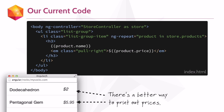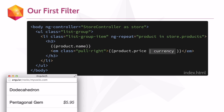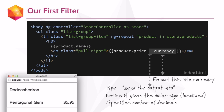Luckily, Angular has a better way to deal with currency. We can use the currency filter in our price expression. Notice here, between these two calls, we have a pipe. The pipe says: take the result of the first expression and send the output into the second expression, which in this case is a filter. Currency will print out the proper dollar sign, localized, and will also give us the correct number of decimals. So now when we call up this page in our browser, we can see that our currency is properly formatted.